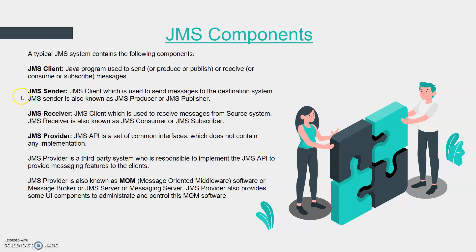Now let's see what is a JMS sender. A JMS sender is a client program used to send messages to a destination, from application A to application B. This program is also known as a JMS producer or a publisher — it is responsible to publish or produce the message on a topic or on a queue. So producer, publisher, and JMS sender are all the same thing.